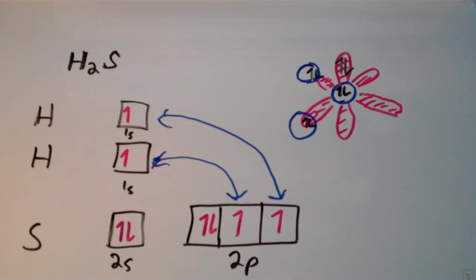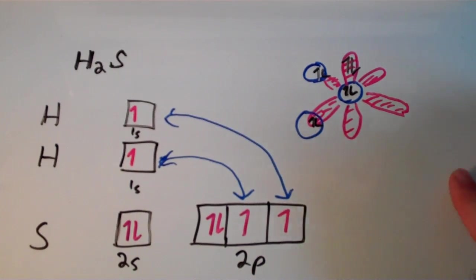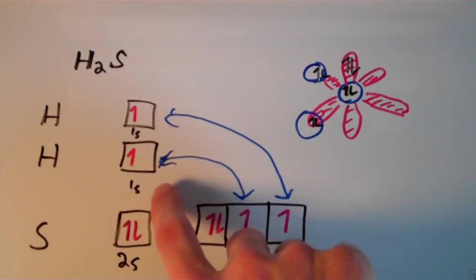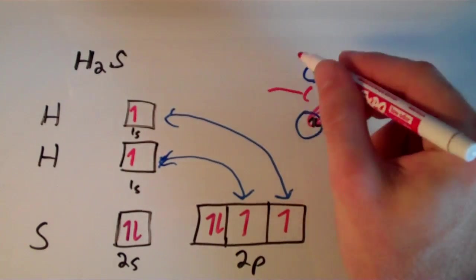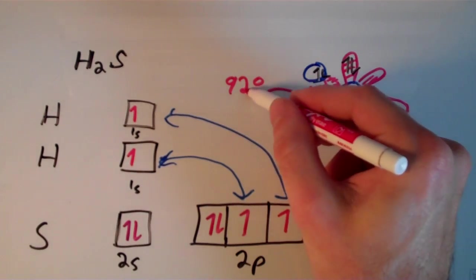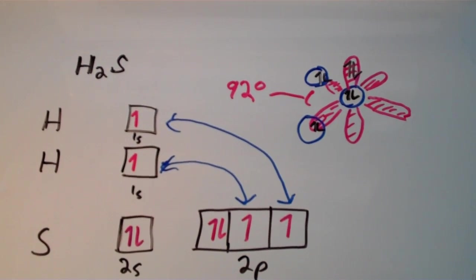So the geometrical implications of this model when we apply a simple atomic orbital overlap treatment to hydrogen sulfide, well, the p orbitals, remember, those are mutually perpendicular. And since the p orbitals are perpendicular, and the 1s atomic orbitals on hydrogen are just overlapping with two of the p orbitals, we would expect the bond angle between the two hydrogens to be about 90 degrees. And in actuality, the bond angle is about 92 degrees.